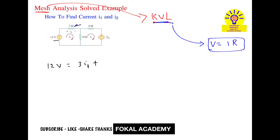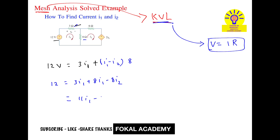Plus, in the 8-ohm resistor, I1 is entering from one side and I2 is entering from the other side. So the voltage drop is the difference (I1 minus I2) into 8 ohms. So totally: 12V equals 3I1 plus (I1 minus I2) times 8, which simplifies to 11I1 minus 8I2 equals 12. Let's consider this as equation 1.